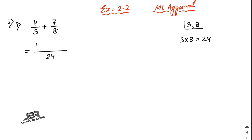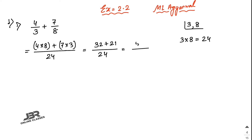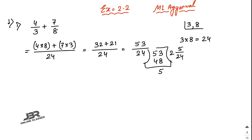Write down 24. Now 3 divides into 24 to give 8, so 4 times 8; and 8 divides into 24 to give 3, so 7 times 3. That gives 32 plus 21 divided by 24, which is 53/24. Converting to a mixed fraction: 24 times 2 is 48, remainder 5, so the answer is 2 and 5/24.